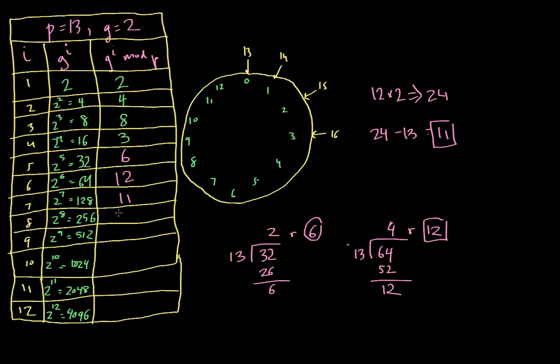I'm going to do this again. 11 times 2 is 22. Then 22 minus 13 is 9. 9 times 2 is 18. 18 minus 13 is 5. 5 times 2 is 10.